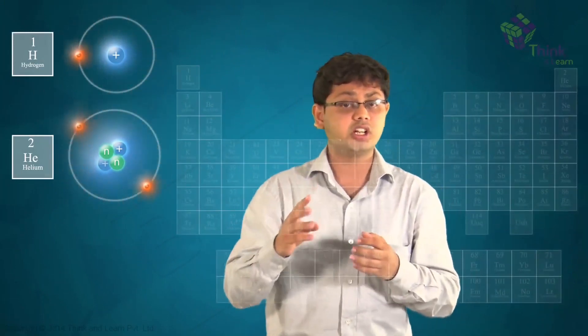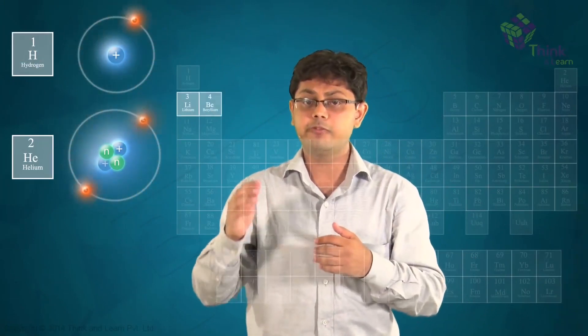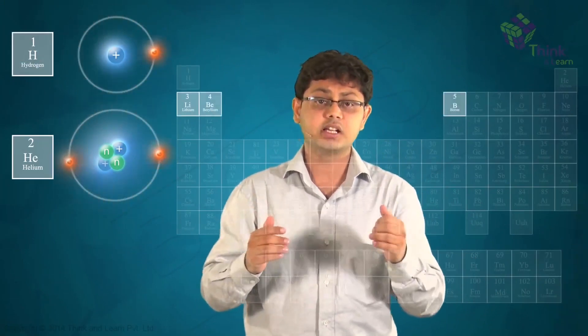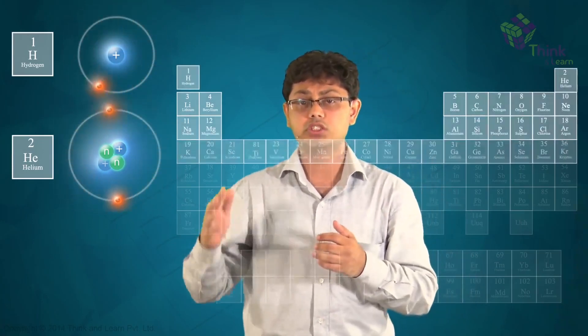So if I have three protons, I'll have my next element, which is lithium. Four protons: beryllium. Five: boron. Six: carbon. Seven: nitrogen. Eight: oxygen, and so on.